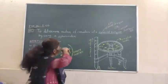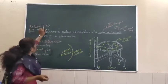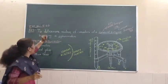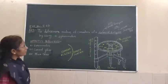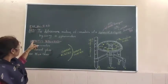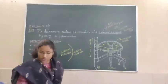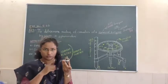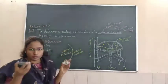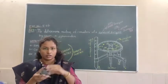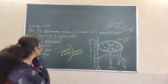Hello students, welcome to your practical class. This is experiment number 5 and 6: to determine the radius of curvature of a spherical surface by using the spherometer. This is your apparatus called the spherometer, and to do this experiment you need two more apparatus — one curved glass and another one is the plane glass.